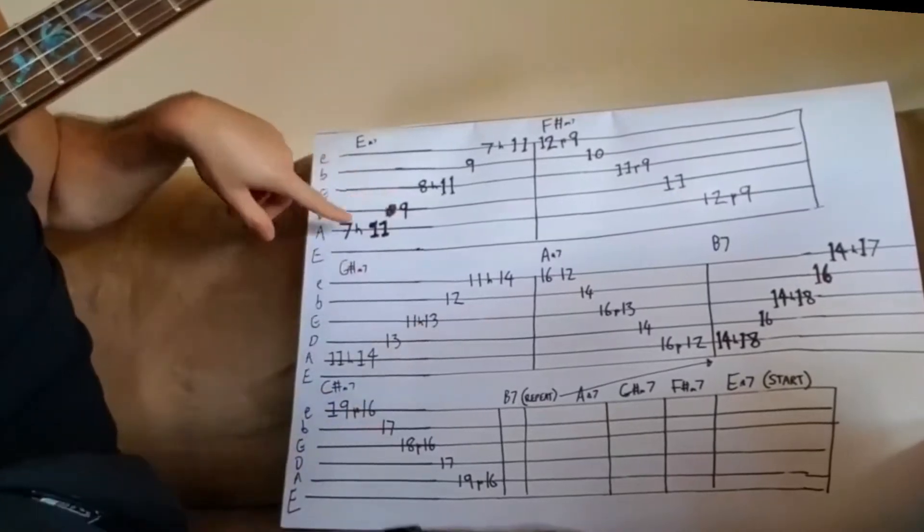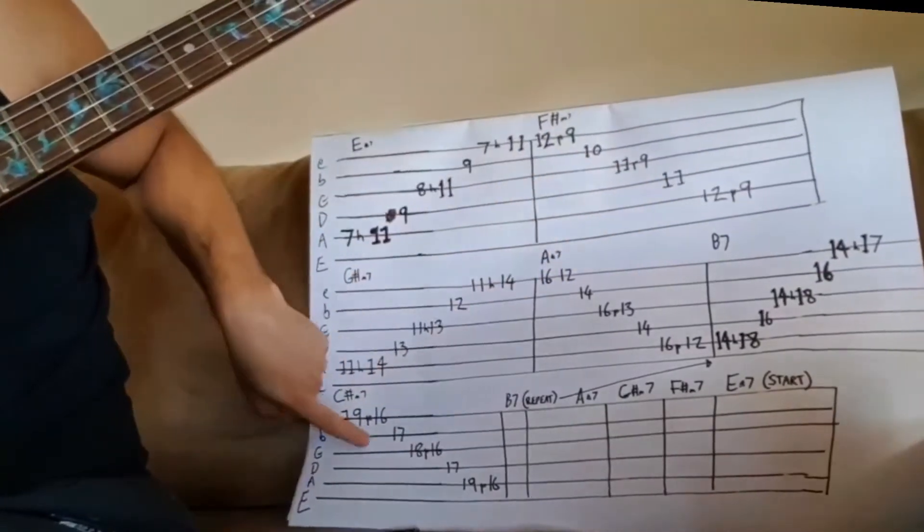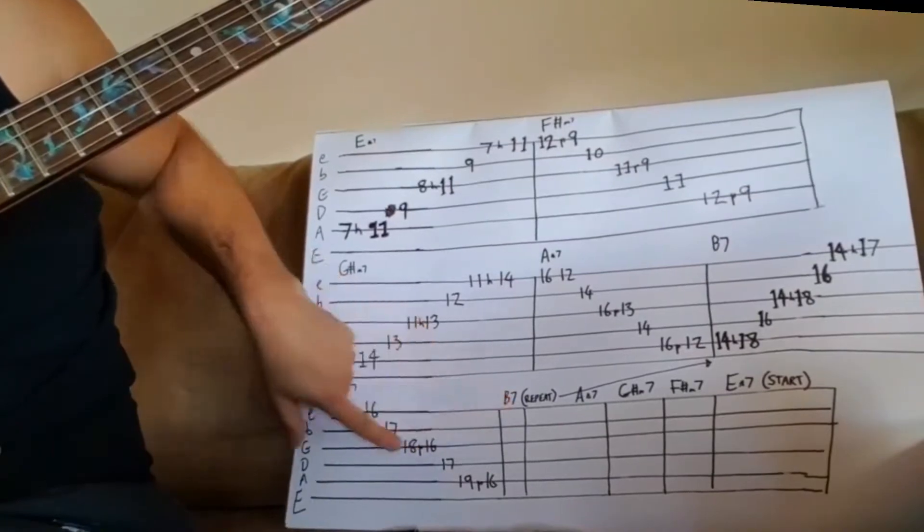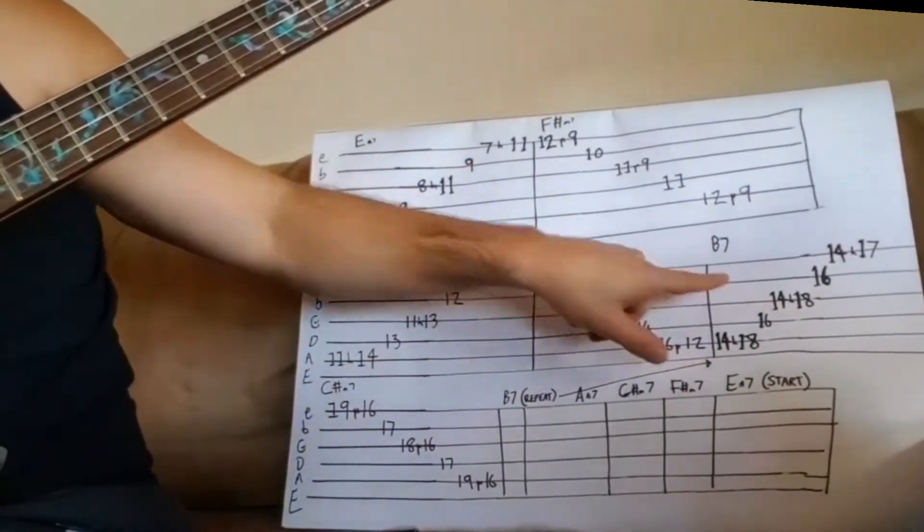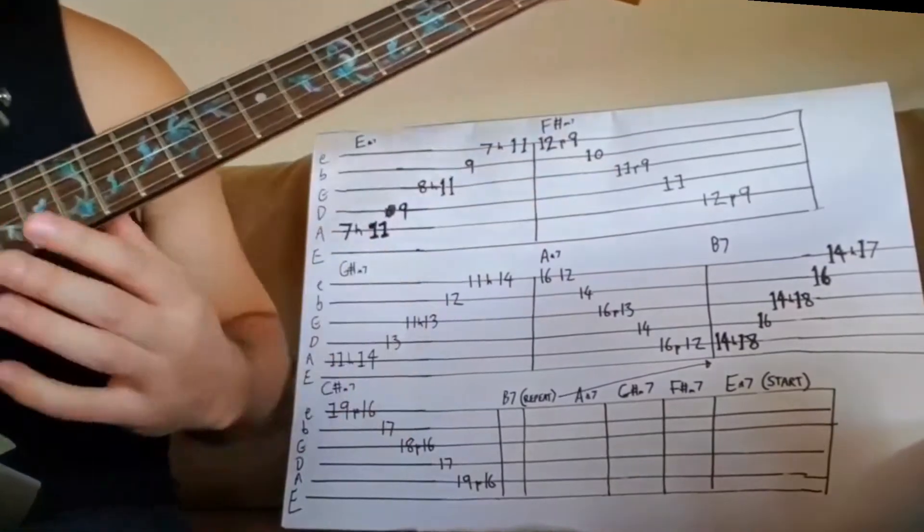Now what happens is you go up through your arpeggios and when you get to C sharp it repeats and goes back the opposite direction. So back to B, back to A, back to the start and it can loop around.